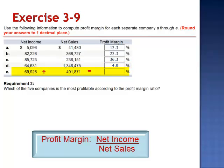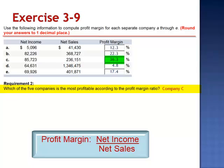And finally, Company E: 69,926 in net income divided by $401,871 in net sales, is a profit margin of 17.4%. So of the 5 companies, the most profitable according to the profit margin ratio would be Company C. For every dollar in net sales, 36.3 cents is realized as net income.